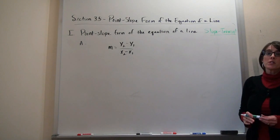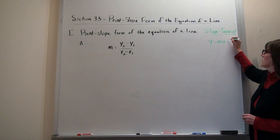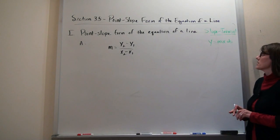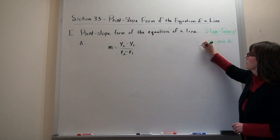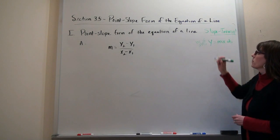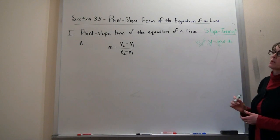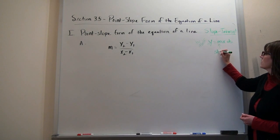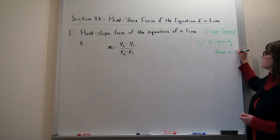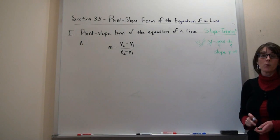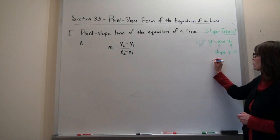Slope-intercept looks like y equals mx plus b. The key thing about this form is that the y is by itself — that's how you know you're in that form. When the y is by itself, you can pull out the slope: it's the number right in front of the x. And you can pull out the y-intercept: it's the constant, the number that has no variable with it. That's what slope-intercept form looks like.